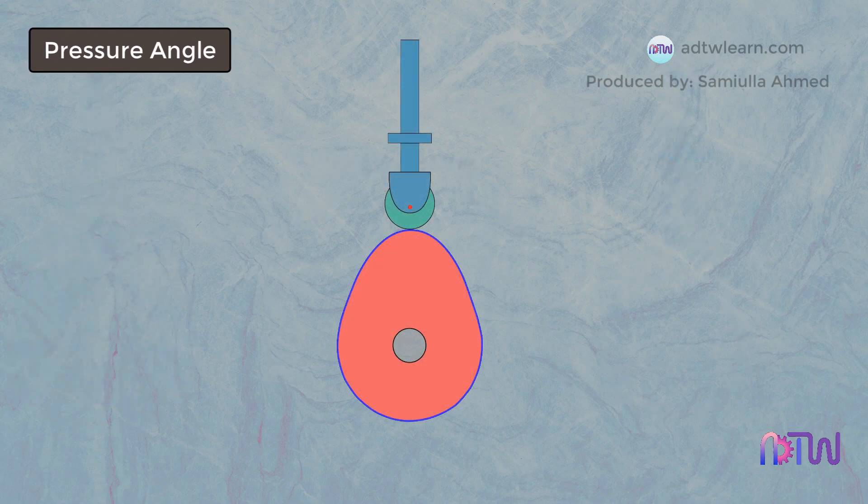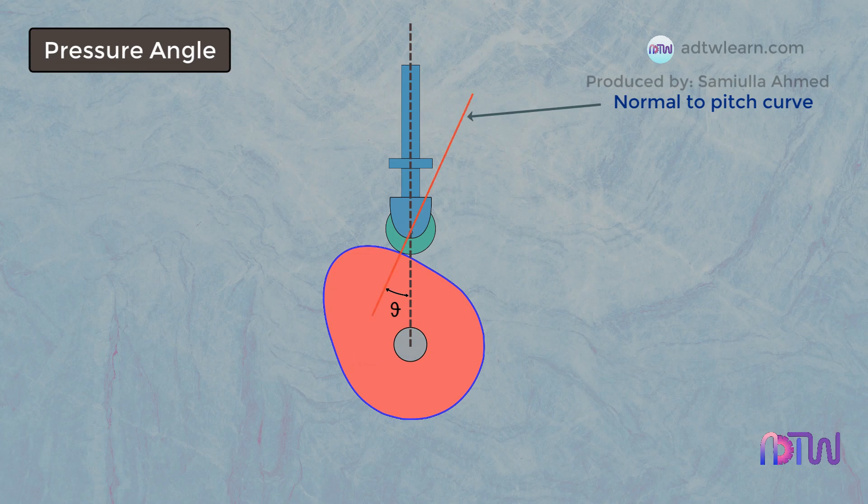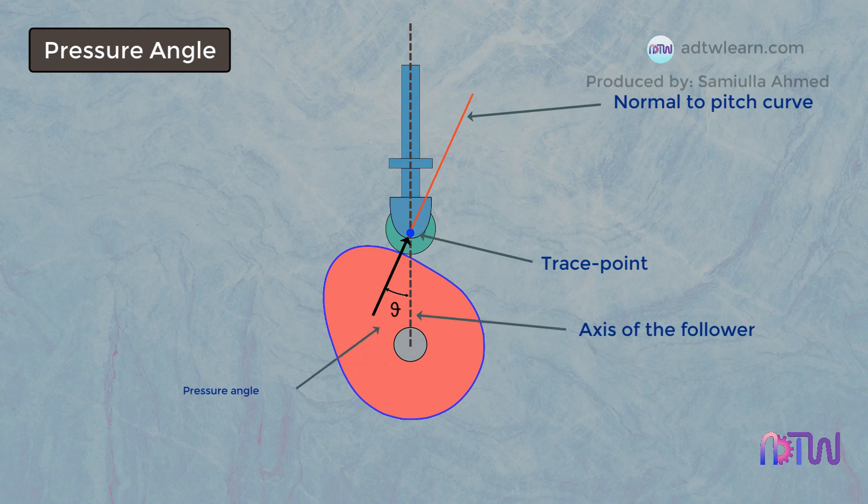Pressure Angle. It represents the steepness of the cam profile. The angle between the direction of the follower movement and the normal-to-pitch curve at any point is called pressure angle. If we draw a normal to the cam profile, this normal is passing through the trace point. In the absence of friction, the force exerted by the cam profile is fully transmitted to the follower through this point. The angle between the normal to the cam profile and the axis of the follower is called the pressure angle.